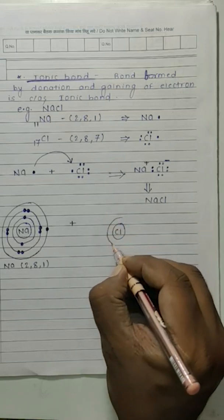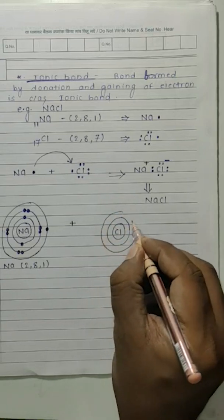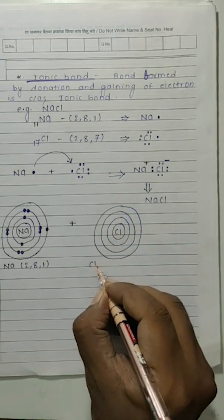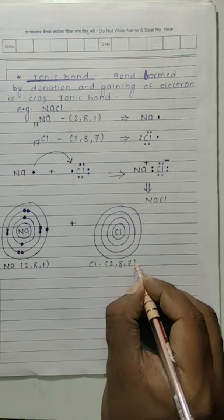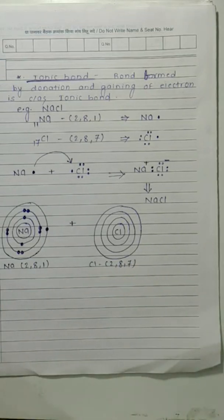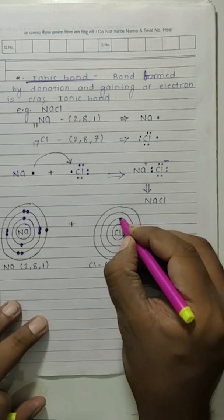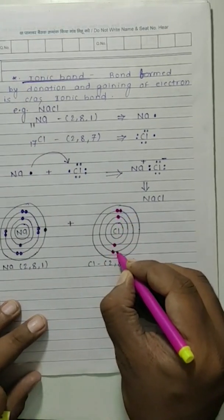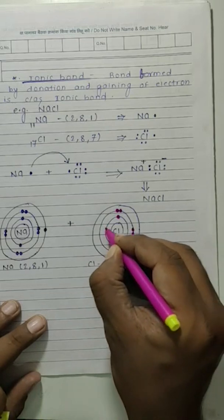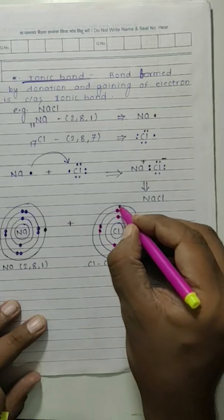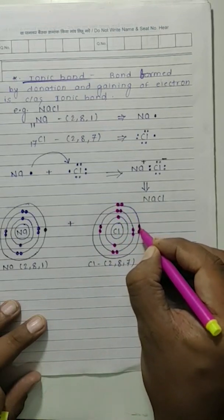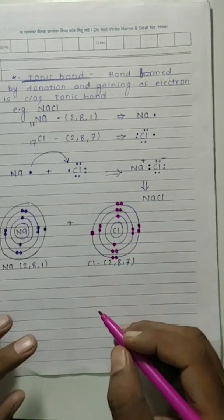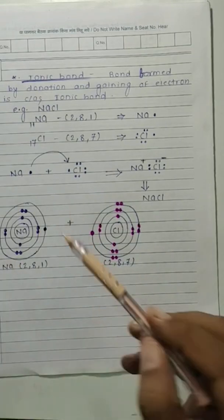Sodium's combination is with chlorine. Chlorine has three orbits — atomic number seventeen, electronic configuration two eight seven. First orbit has two electrons, second orbit has eight electrons, and the third orbit has seven electrons: two eight seven.